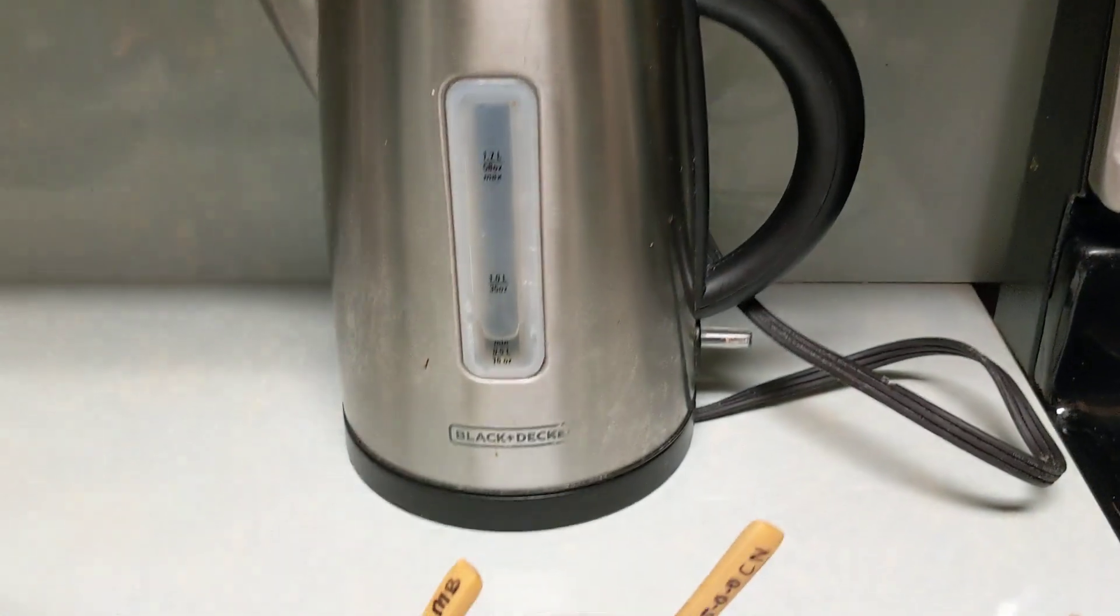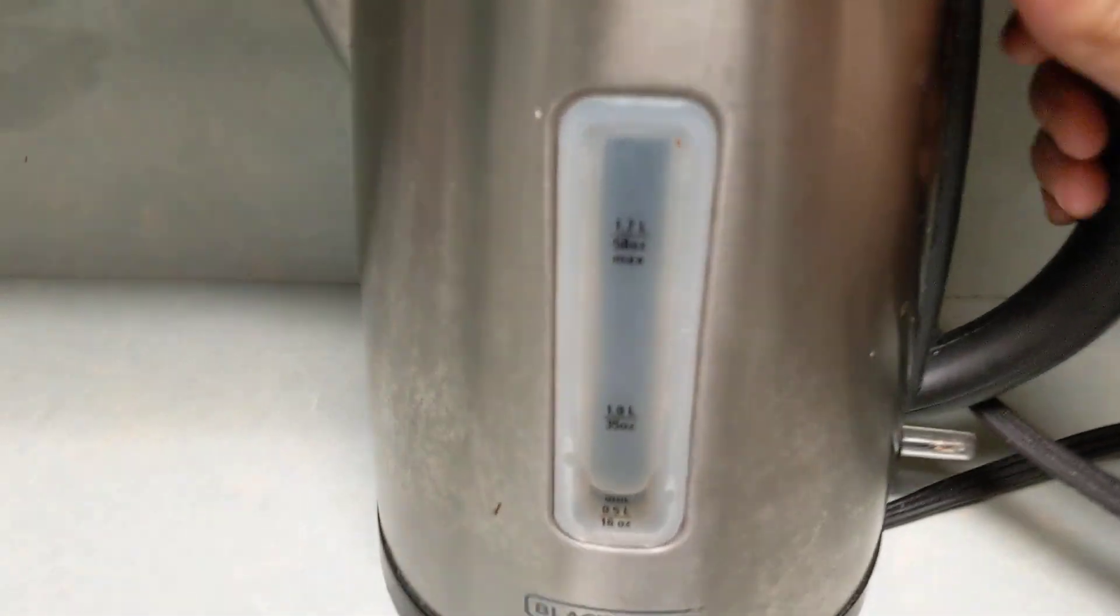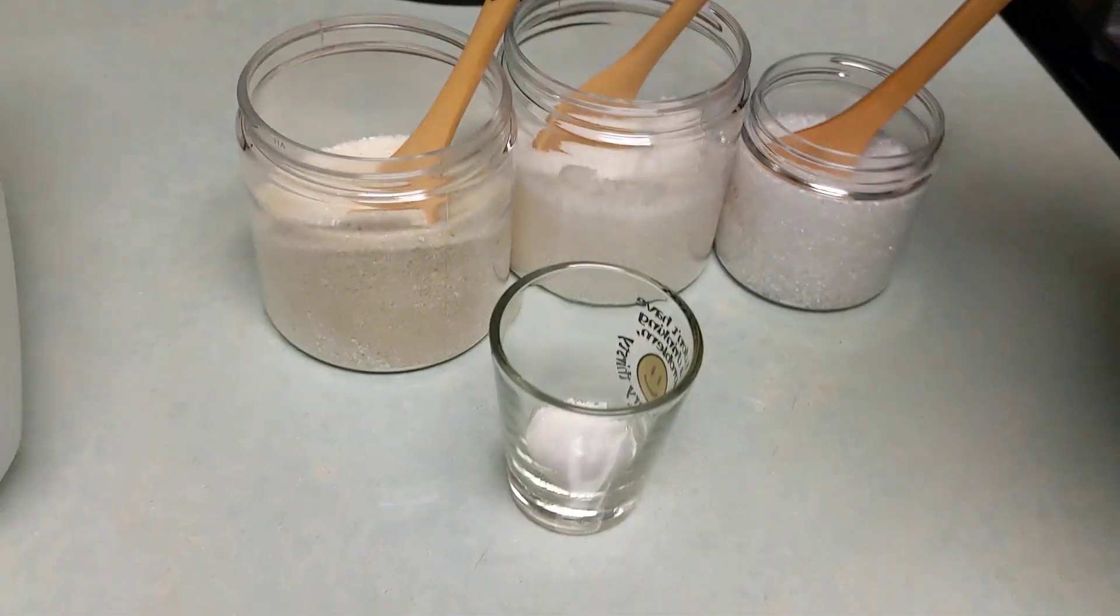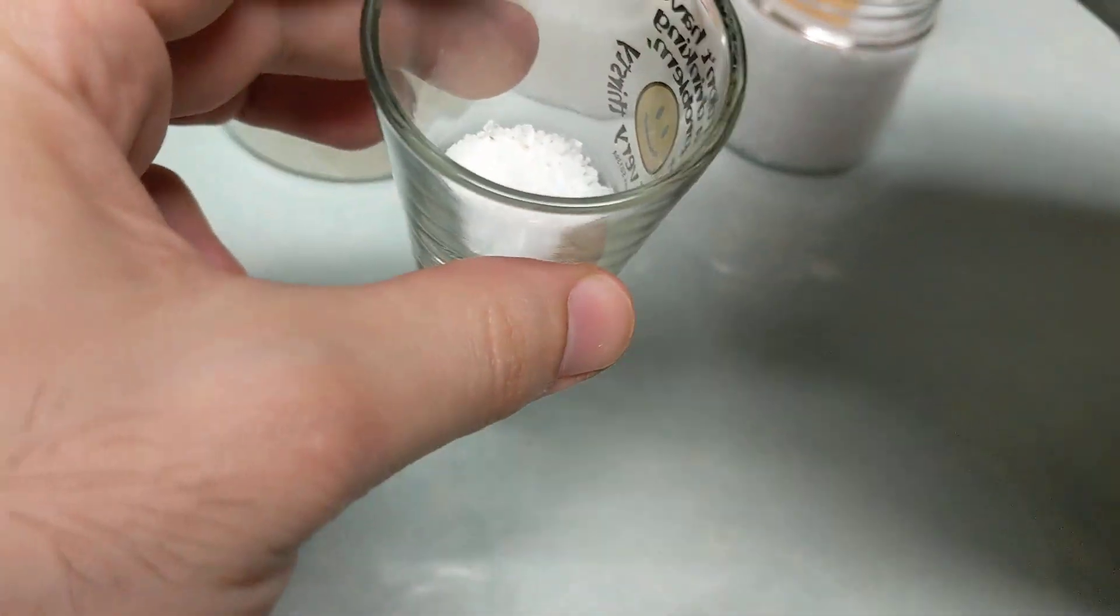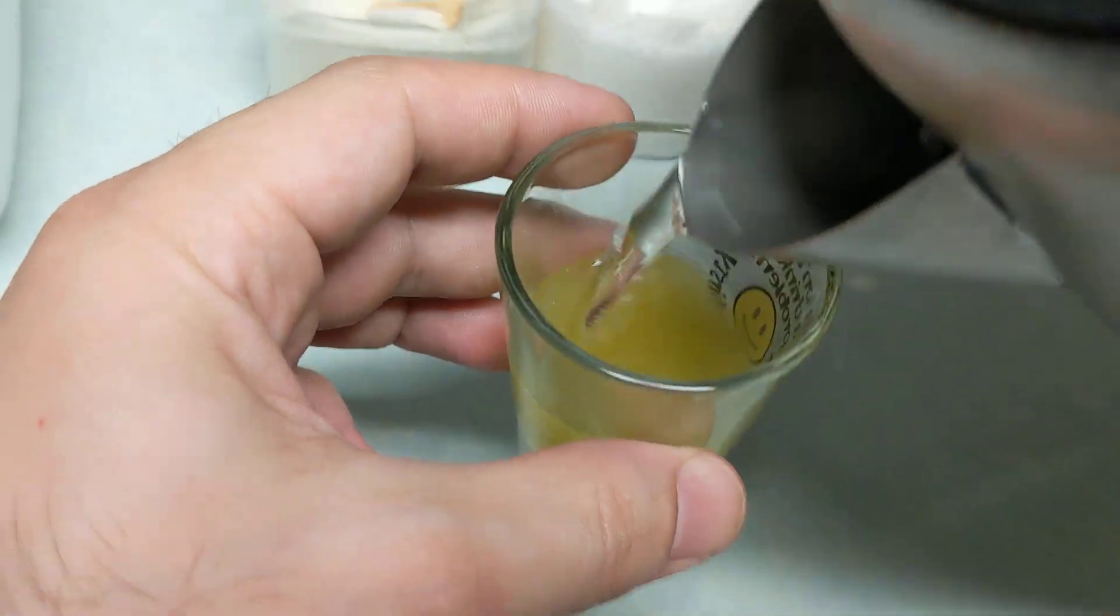So now that the water is boiled, this is by far the fastest, easiest, most efficient way that I found to mix up my fertilizer. Just pour a little bit of boiling water, the hotter the better. You don't need a lot, just a little bit goes a long way.